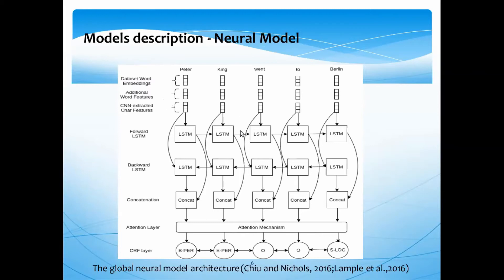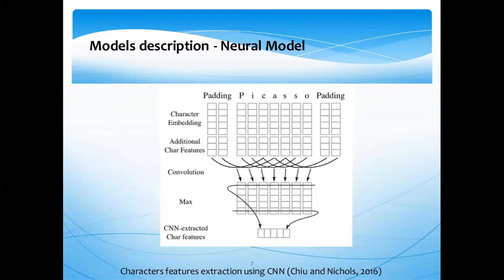We inject everything into two LSTM layers. The outputs of the two LSTM layers are concatenated and injected into an attention layer. The tagging at the end is done by a CRF layer, which is the same mechanism as the CRF model. Here is an example showing how we extract features from word characters using a CNN.